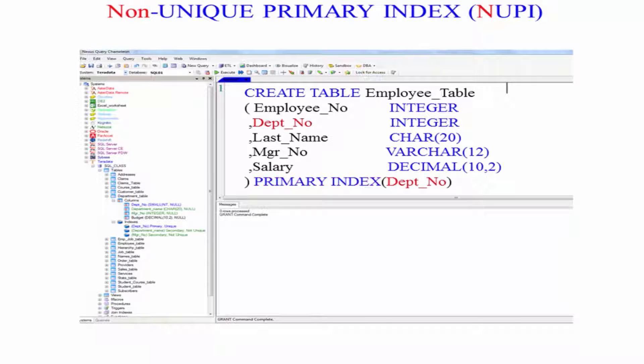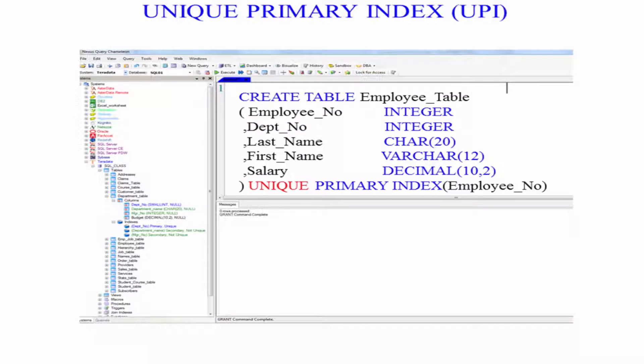In this case, when the table is created, that's when you define the primary index. And as you can see here, a unique primary index, that's going to be an OOPI.